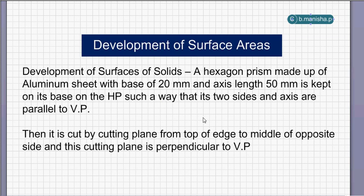Hi, this video is about development of surface areas. This problem here: a hexagon prism made up of aluminum sheet with a base of 20 mm and axis length 50 mm is kept on its base on the horizontal plane such that its two sides and axis are parallel to vertical plane.